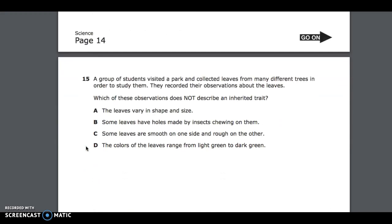Number 15. A group of students visited a park and collected leaves from many different trees in order to study them. They recorded their observations about the leaves. Which of these observations does not describe an inherited trait? A, the leaves vary in shape and size; B, some leaves have holes made by insects chewing on them; C, some leaves are smooth on one side and rough on the other; D, the colors of the leaves range from light green to dark green.